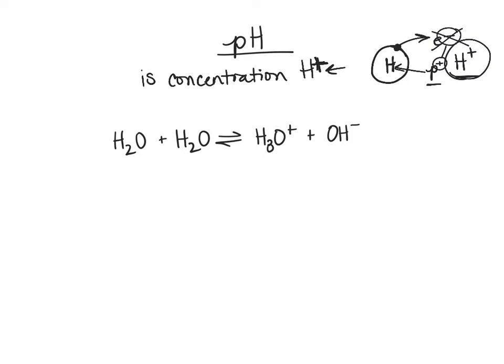The solution we're usually talking about is water — especially when discussing the human body, which contains a lot of water. Our blood is composed mainly of water. Water is H2O, which we can draw with the oxygen and the two hydrogens. If we keep track of electrons, recall that a bond is two electrons. The oxygen also has other electrons in its outer shell — it has eight total, with two in each bond with hydrogen.